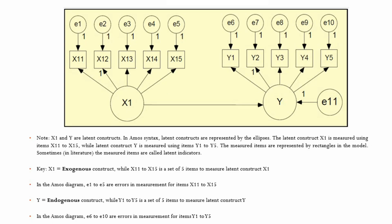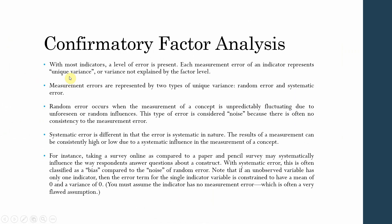With most indicators, a level of error is present. Each measurement error of an indicator represents unique variance or variance that is not explained. Some of the variance may be left behind and that is represented in the error.